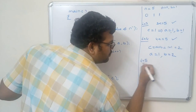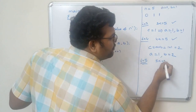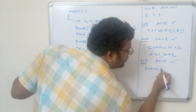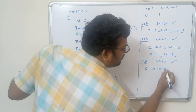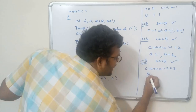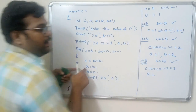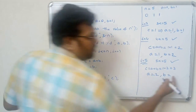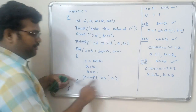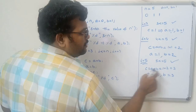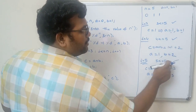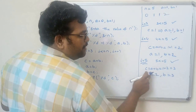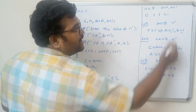i is incremented to 5. 5 less than or equal to 5, condition is true. c equal to a plus b: 1 plus 2 equals 3. b's value (2) is assigned to a, and c's value (3) is assigned to b. printf prints c, so 3 is printed.